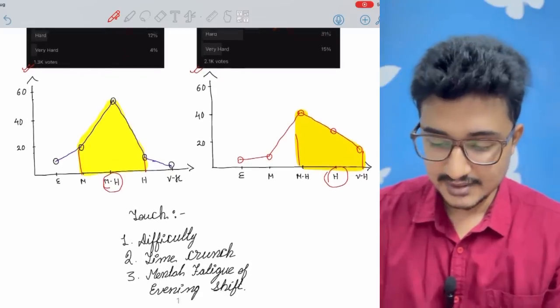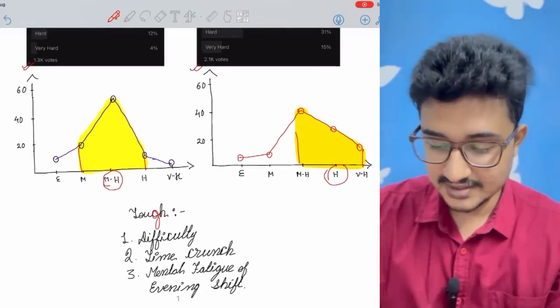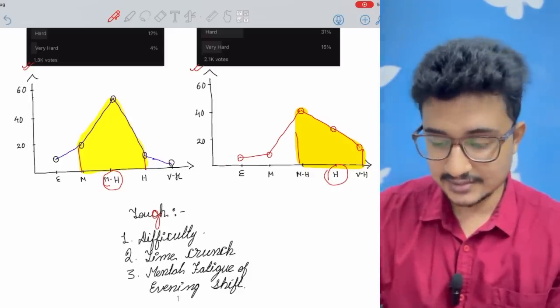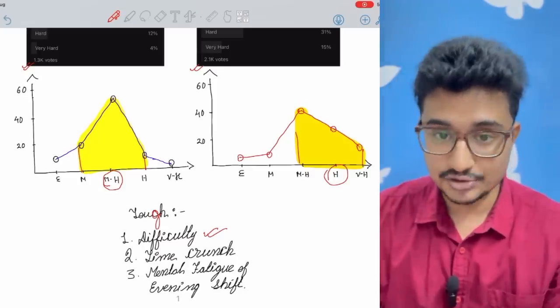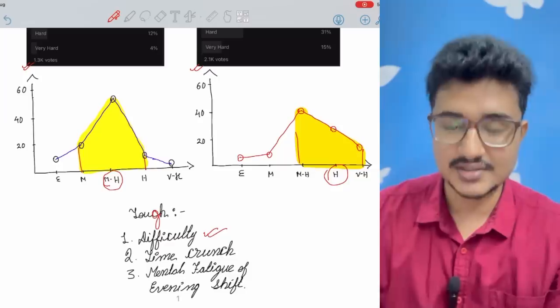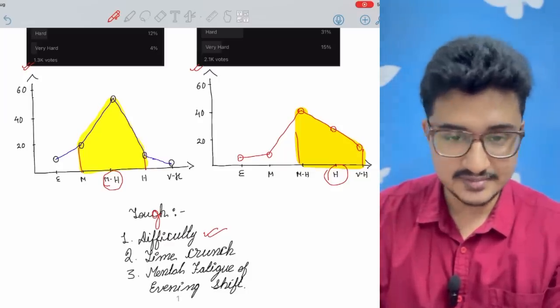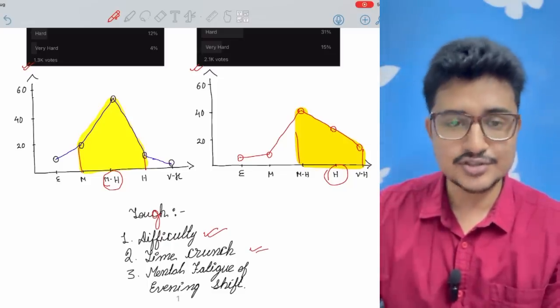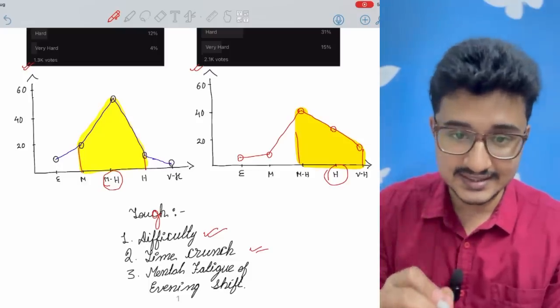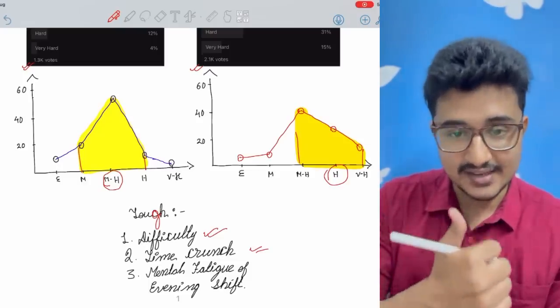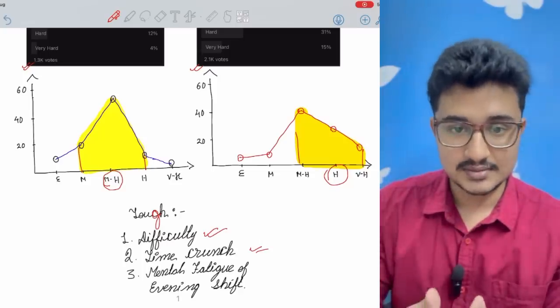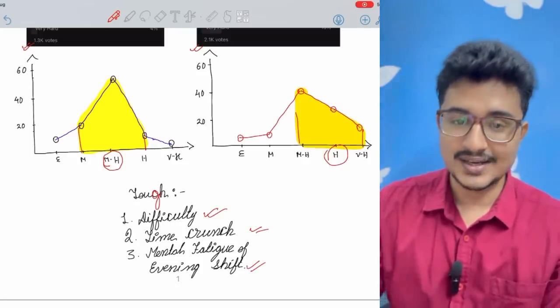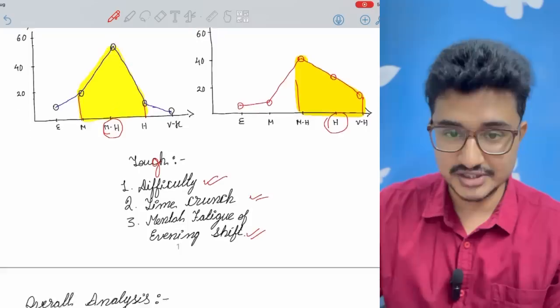Now what is the definition of toughness? It depends on the difficulty level which was more in the evening shift. It depends on the time crunch - both had long stem questions. There is also mental fatigue that occurs in the later half of the day and so the evening shift ones are more prone to face it. So these points go against the evening shift and it makes evening shift a bit difficult.